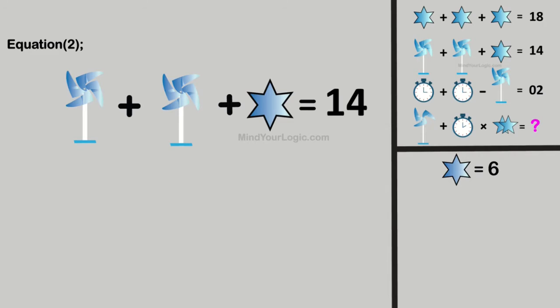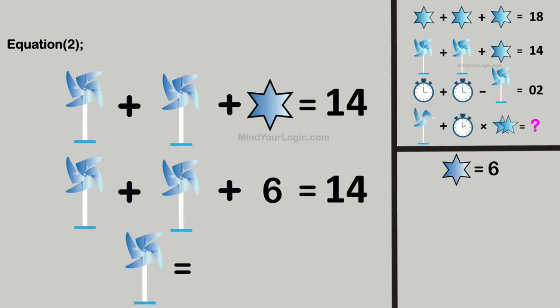Substitute the value of star in equation 2. On solving, we get the value of windmill is 4.